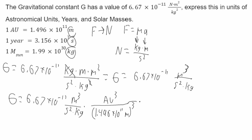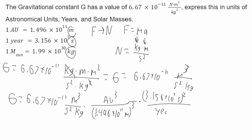Now I'll convert seconds. Since seconds are on the bottom, my expression for seconds will go on the top. This will be 3.156 times 10 to the 7 seconds, squared, and on the bottom I'll have years squared.